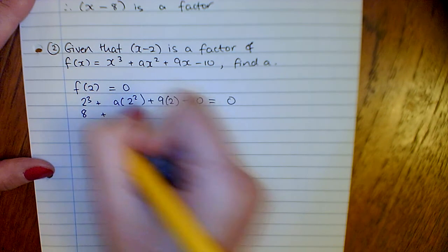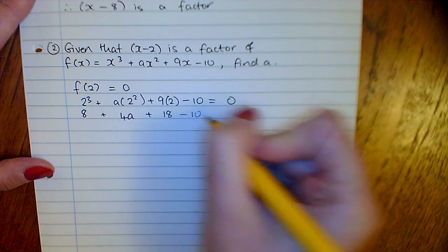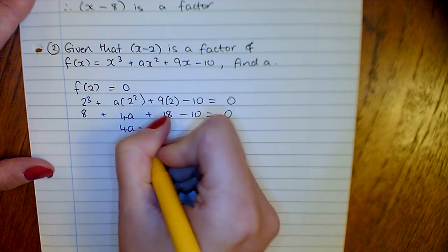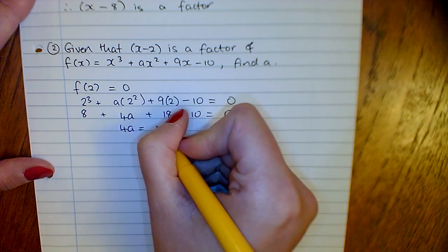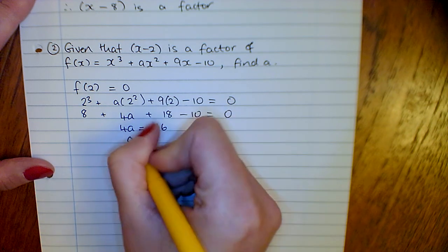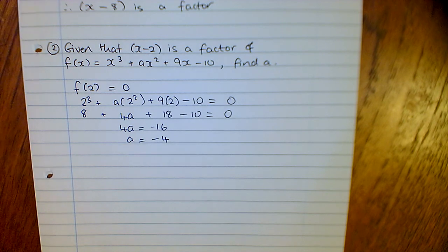Bringing everything else over the other side, we get 4a equals minus 16, and a turns out to be minus 4.